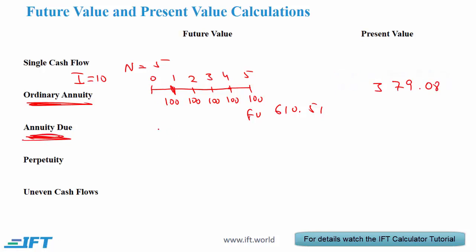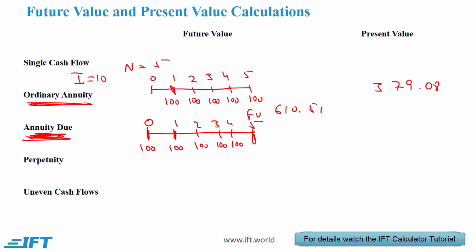With an annuity due the cash flow happens at the start of each period. So if we take the same 5 periods but we now say that we are dealing with an annuity due, then the payments of $100 basically shift left. So the first payment is happening at the start of period 1, which is the same as time 0, and then we have 100, 100, 100, and 100 — the same 5 payments but shifted to the left. The future value is going to be somewhat higher than 610.51 because the payments are being received earlier. To use the calculator you first put it into begin mode and then plug in the numbers as before. Keep in mind that the future value being calculated here is at the end of period 5.